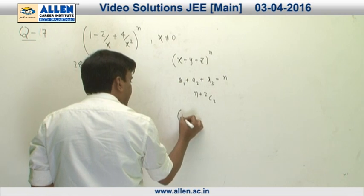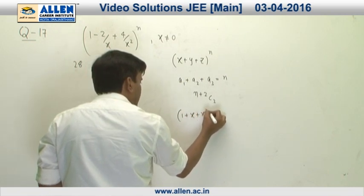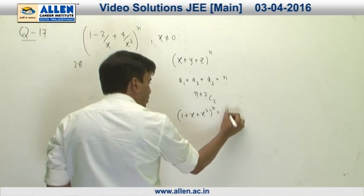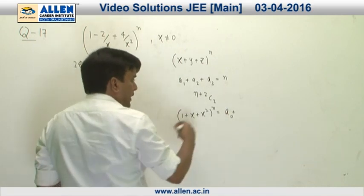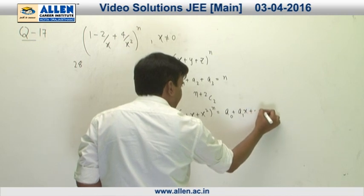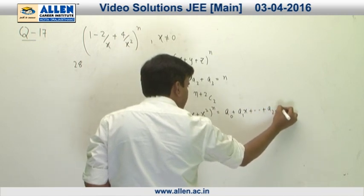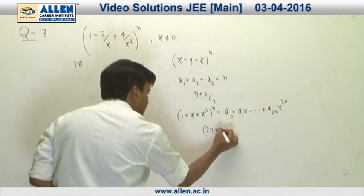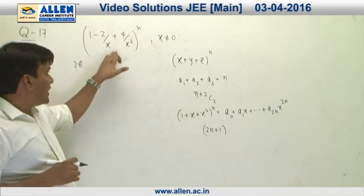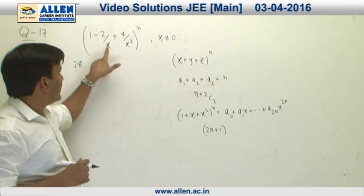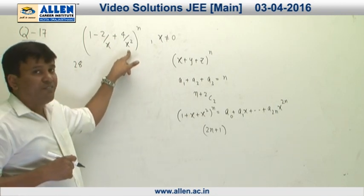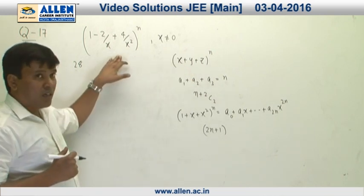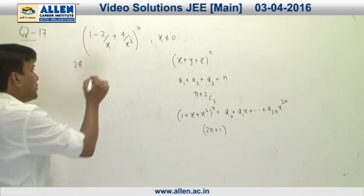But suppose this is like 1 plus X plus X square raised to the power N and we have to find out the different dissimilar terms. We will get a constant term like A0, then A1X, and finally the highest power is A2N X to the power 2N. Total number of terms is 2N plus 1. If we look judiciously, this problem falls into this category because these two are functions of same variable, not like this where the variables are different.